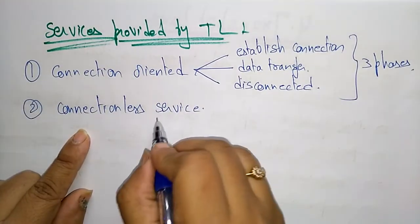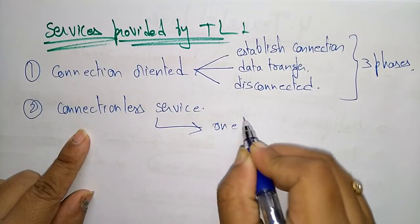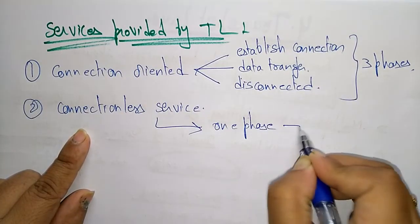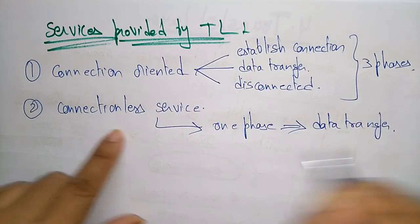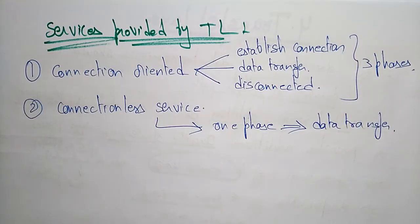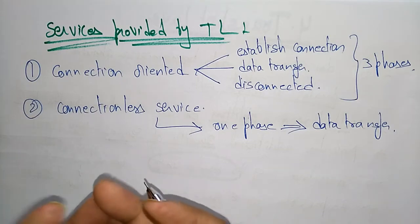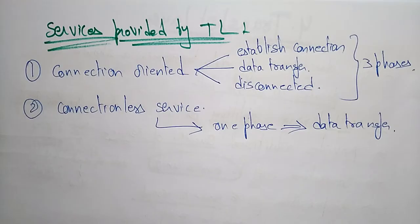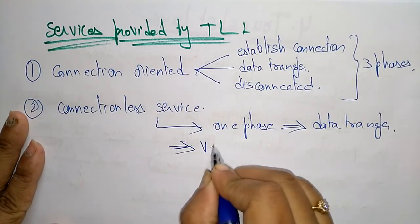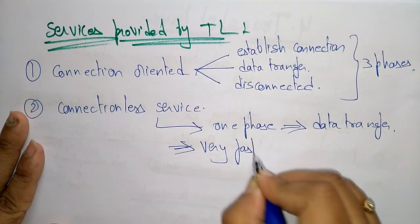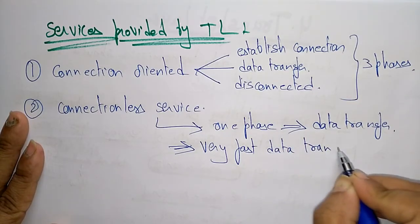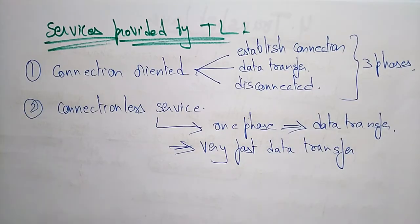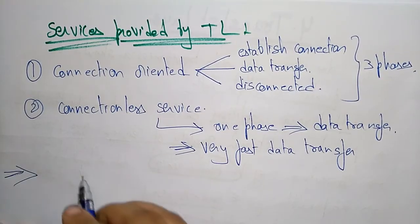Connectionless service has only one phase: data transfer. There is no need to establish or disconnect a connection — whenever data is there, you simply transfer it. That's why connectionless service provides very fast data transfer.